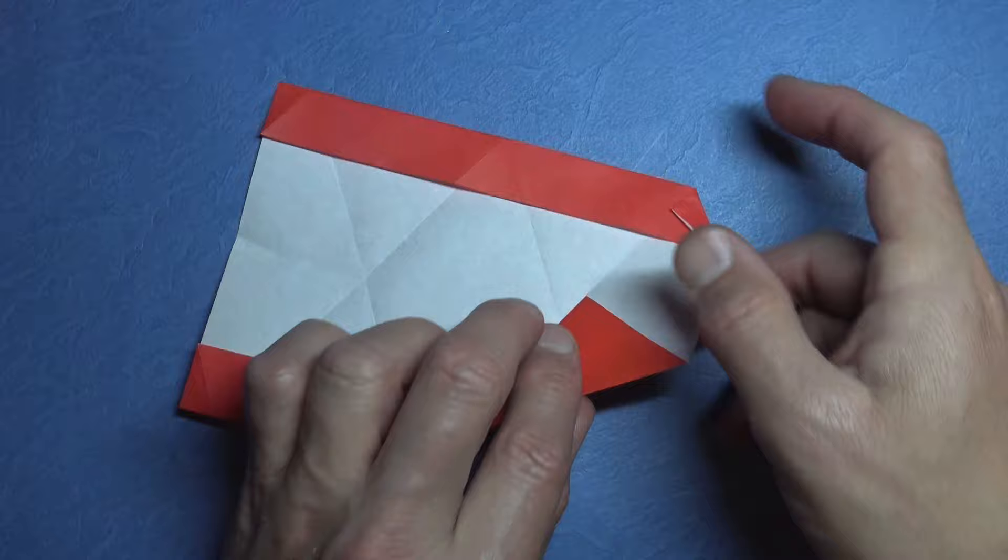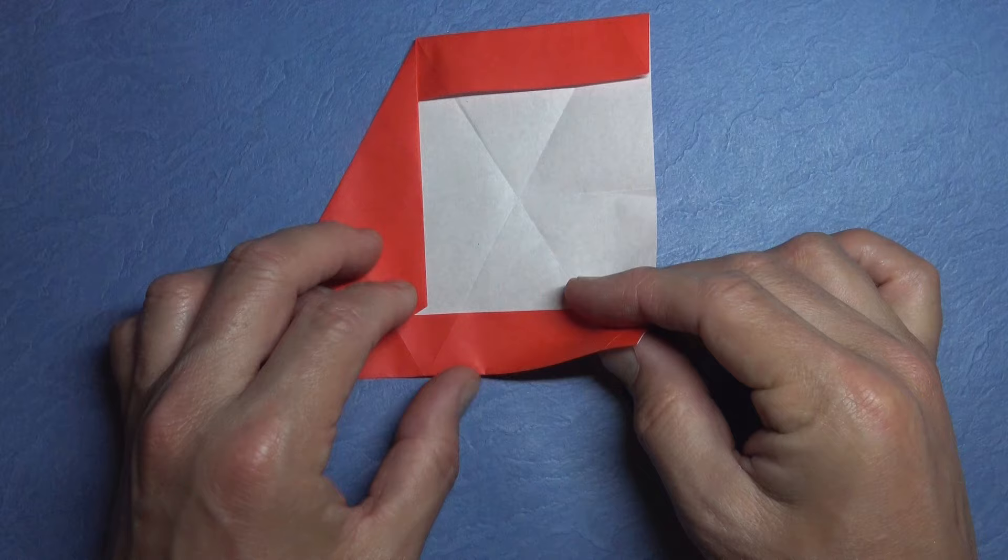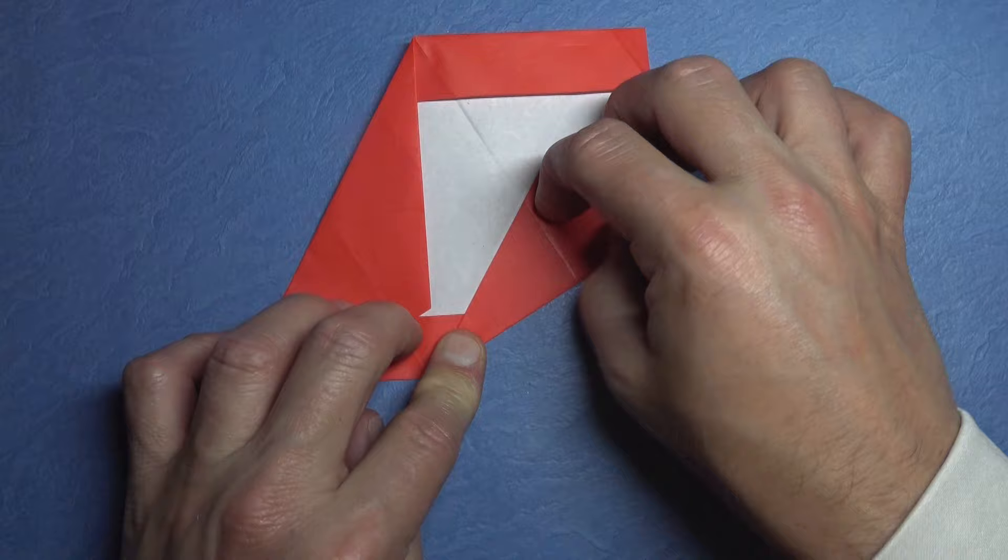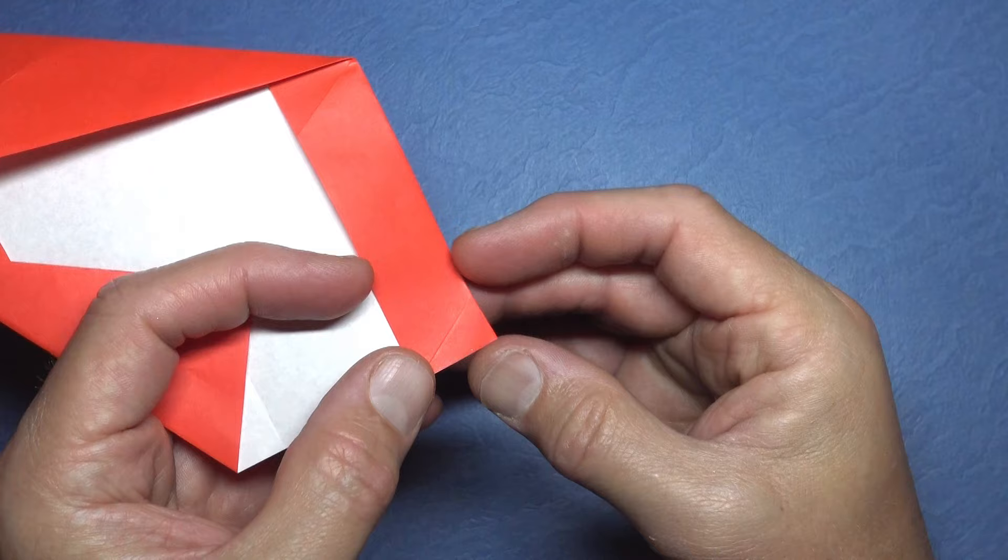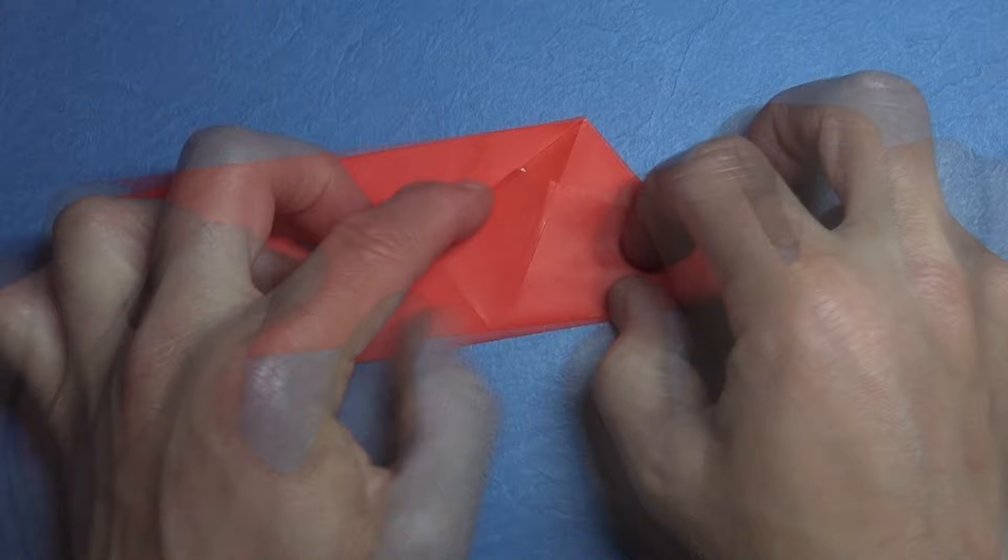And now fold this flap over. Rotate and fold this edge so that it aligns with this crease, and fold the layers together so that it aligns with this crease, and fold up like this, and fold up like this.